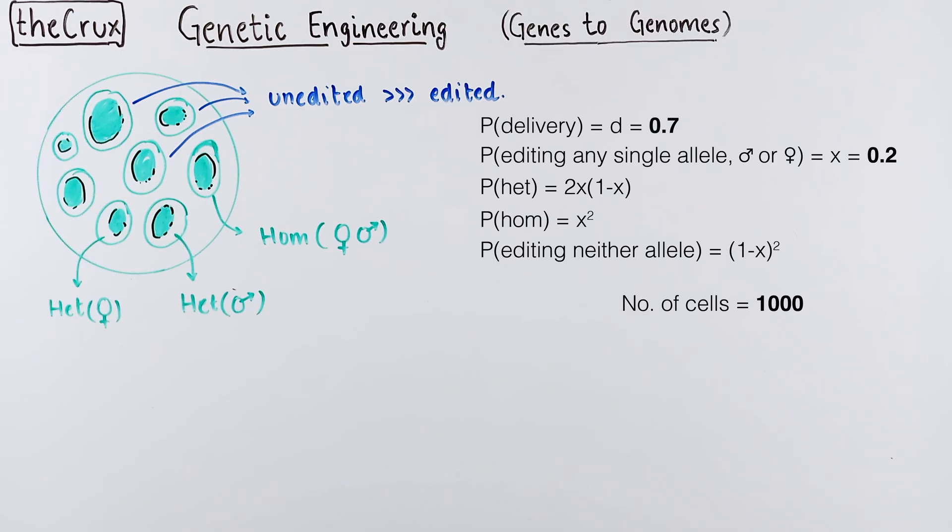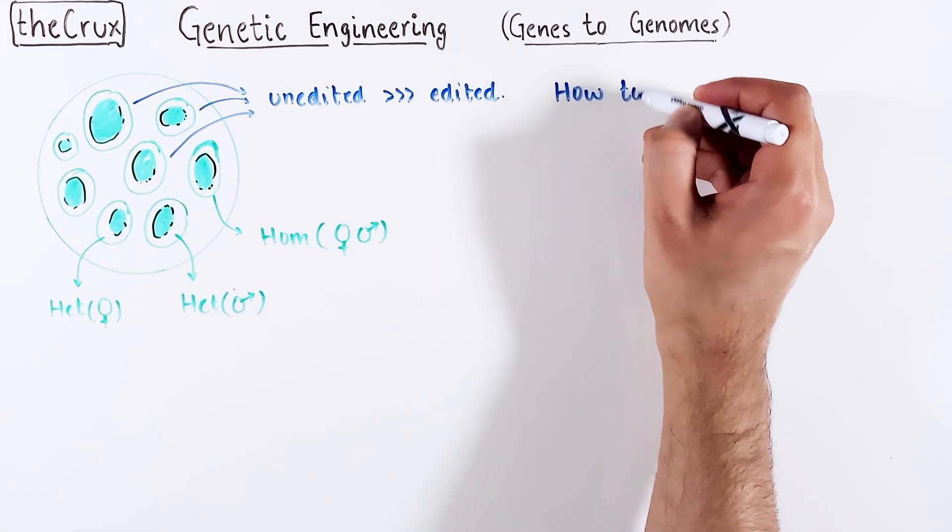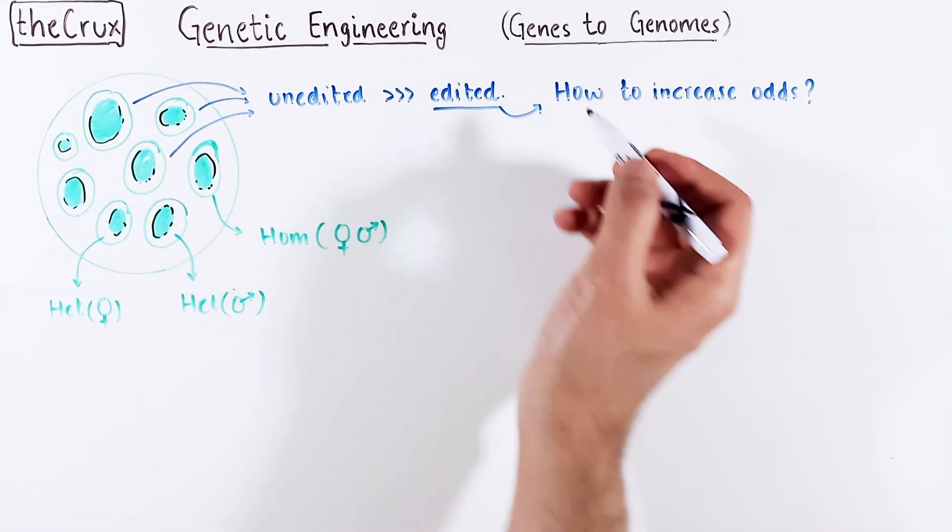Now that we have these formulas, let's say that the probability of delivery is 0.7 or 70% chance. And assume that the probability of editing any single allele is 0.2. Assume that you have 1000 cells in culture. Now, given the numbers and formulas, we can get the expected proportion of HETs and HOMEs in our CRISPR experiment. Given our somewhat realistic assumptions about probabilities, you notice that the non-editing fraction of cells is quite higher than the editing fraction. So how do you go about increasing the odds of obtaining the edited cell population?